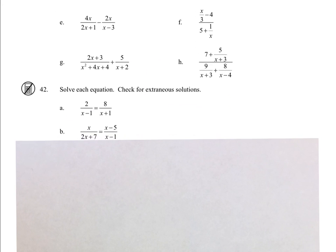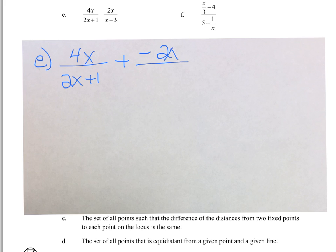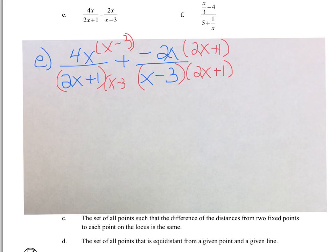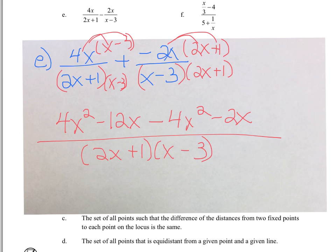Now for E, with subtraction, so that the negative symbol does not get lost, I like to make it plus a negative. Then we need our common denominator. Distributing to simplify the numerator: 4X squared minus 4X squared is 0, and negative 12X minus 2X is negative 14X in the numerator over the common denominator.